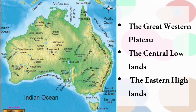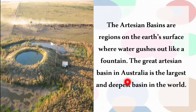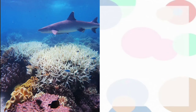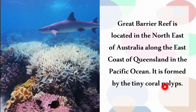Australia's physical divisions are classified into three: the Great Western Plateau, the Central Lowlands and the Eastern Highlands. The Great Artesian Basin in Australia is the largest and deepest basin in the world. The Great Barrier Reef is located in the northeast of Australia along the east coast of Queensland in the Pacific Ocean, formed by tiny coral polyps.